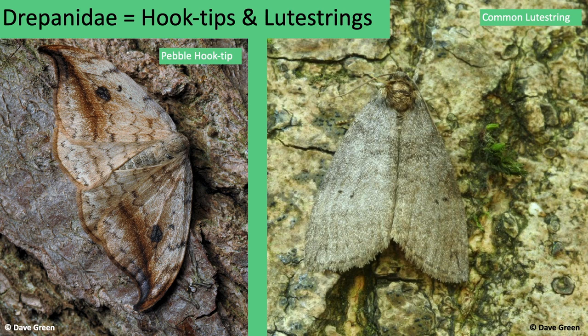The Drepanidae family is split into two groups: the hook-tips and the lutestrings. There are six resident hook-tips in the British Isles; the seventh is an occasional migrant. The tips of the forewings are strongly hooked, except for one species. They are day and night flyers and often caught in light traps. The lutestrings — nine residents to the British Isles, and most have prominent scale tufts or ridges on the forewings.